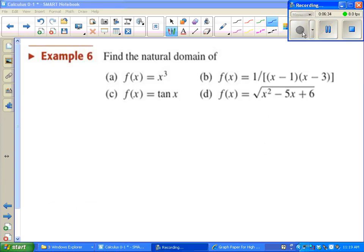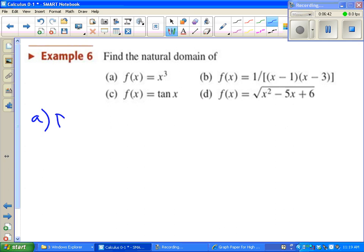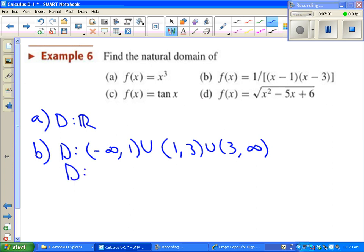This example says find the natural domain of various functions. Part A is friendly. There's nothing that causes a problem, so we say domain is all real numbers. Part B looks like we can't divide by a couple things. So we might say domain is all real numbers except 1 and 3. The mathematically correct way to write that would be domain is negative infinity to 1 union 1 to 3 union 3 to infinity. I'd also accept it if you just wrote out as a sentence domain is all real numbers except 1 and 3, or if you just said x does not equal 1, x does not equal 3.